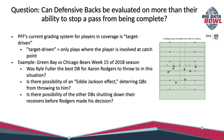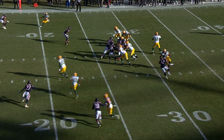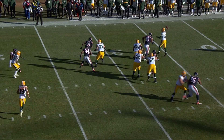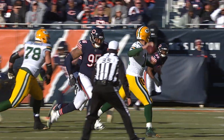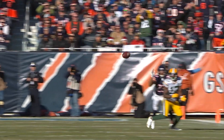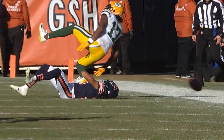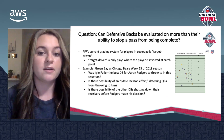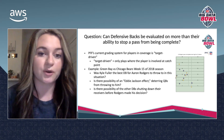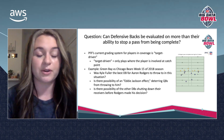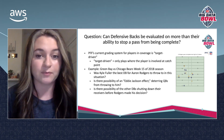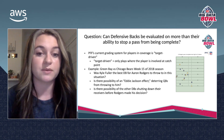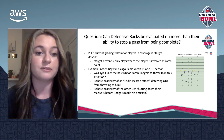For example, look at this play in week 15 of the 2018 season where the Green Bay Packers are playing the Chicago Bears. Here, there's an incomplete pass from Aaron Rodgers thrown to Devontae Adams. Was Kyle Fuller truly the best defensive back for Aaron Rodgers to target, or is there a possibility of an Eddie Jackson effect — where Eddie Jackson's on the field and he's deterring quarterbacks from throwing to him purely because he's known as being a very good defensive back? There can also be a possibility of other defensive backs on the field shutting down receivers even before Rodgers made his decision to throw the ball.